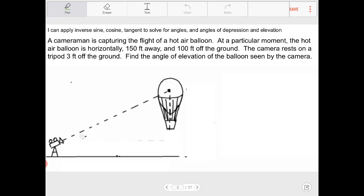With that in mind, let's try to go over this first word problem. So it says here a cameraman is capturing the flight of a hot air balloon. At a particular moment, the hot air balloon is horizontally positioned at 150 feet away and 100 feet off the ground. The camera rests on a tripod 3 feet off the ground and our task is to find the angle of elevation of the balloon seen by the camera.